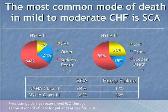Looking at heart failure patients with ejection fractions less than 35%, their biggest threat is sudden cardiac arrest. In New York Heart Association Class II heart failure, 64% of deaths are due to sudden cardiac arrest, only 12% due to pump failure or other causes. As the patient gets sicker, sudden cardiac arrest makes up a smaller portion — at Class IV it's roughly a third each. So it's really the biggest threat to the patient with congestive heart failure who's otherwise functioning well.